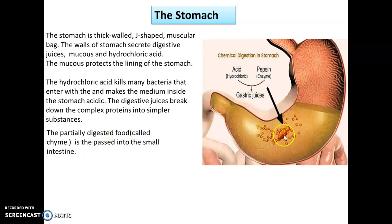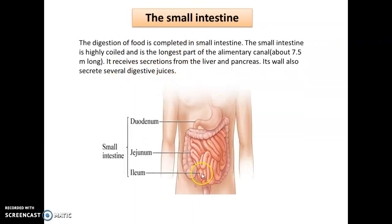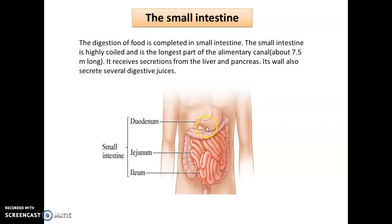The partially digested food is called chyme and needs to be passed forward to the small intestine for further digestion. The digestion of food is completed in the small intestine. The small intestine is highly coiled and is the longest part of the alimentary canal — it is about 7.5 meters long. It receives secretions from two different organs or glands, that is the liver and pancreas, and also secretes its own juice for digestion.